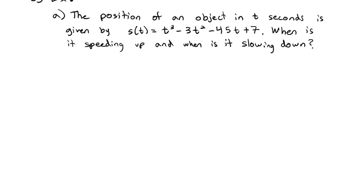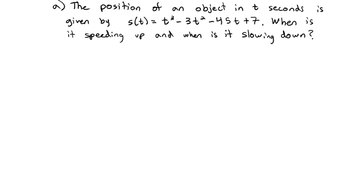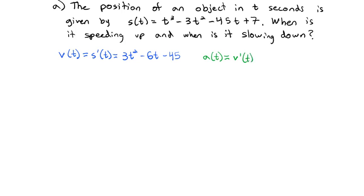We'll answer that by first finding the velocity function, which is the derivative of s(t): v(t) = 3t² − 6t − 45. The acceleration is then the derivative of the velocity: a(t) = 6t − 6.